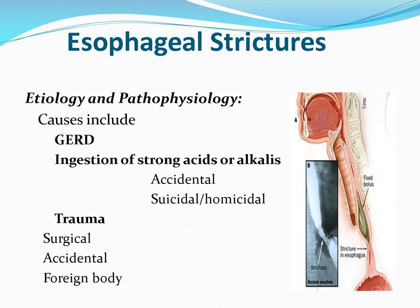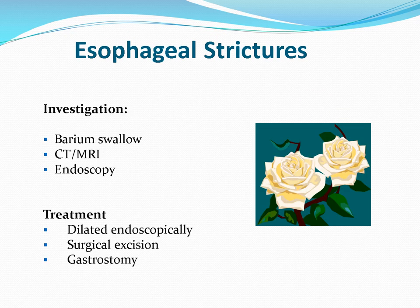Esophageal surgeries or other surgeries can damage the esophageal wall, and the patient will later present with stricture. Investigations include CT and MRI to rule out other problems, and endoscopy with biopsy from suspicious areas because malignancy can also present with stricture. Treatment is dilatation with bougies or endoscope; sometimes surgical excision is needed, or if the patient is unfit for surgery, gastrostomy is performed.